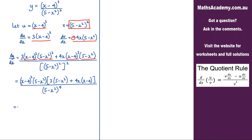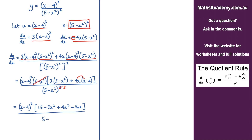We can cancel the (5 minus x squared) from the numerator with one of these in the denominator, leaving us with power 3. Expanding the brackets inside, we get 15 minus 3x squared, plus 4x squared, and then minus 16x. That is all over (5 minus x squared) to the power of 3.